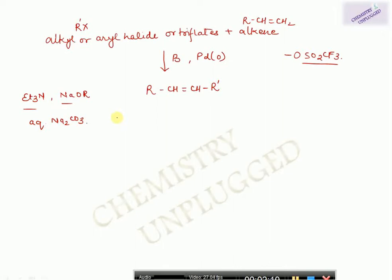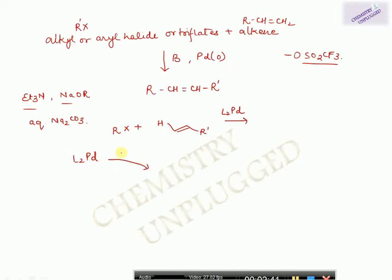Now we will try to understand the reaction mechanism. Suppose we have the reaction between RX and an alkene. The first step is: the palladium complex will show an oxidative addition reaction with RX. Starting from the palladium complex, it will combine with RX by oxidative addition.